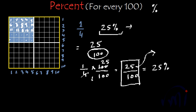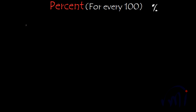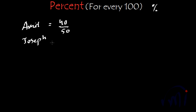Let me take one example. Suppose there are two boys — Amit and Joseph. Amit has scored 40 marks out of 50, and Joseph has scored 190 marks out of 200. So who has done better in his exams? If we see just these marks, it's very difficult to compare. But if we can find their percentage marks — that means if the paper would have been out of 100, how many marks would they have scored — we can compare them.